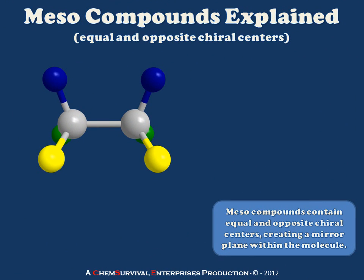A third type of stereoisomer you're likely to encounter is a meso compound, which is not actually a set of stereoisomers but the exact same compound. We have here a compound which contains two chiral centers that are equal but opposite in handedness. Our two chiral centers each contain blue, green, and yellow substituents, with the other chiral center as the fourth substituent. Because they have the same four substituents but opposite handedness, they create a mirror plane within the center of the compound.